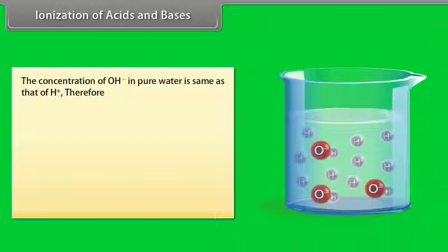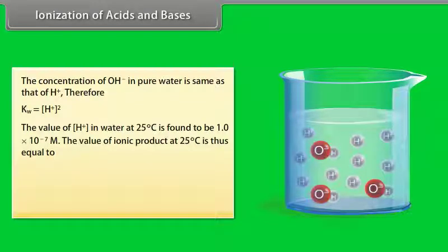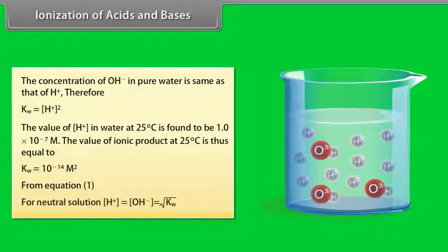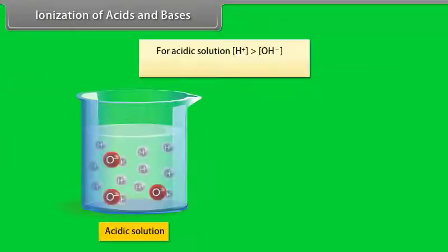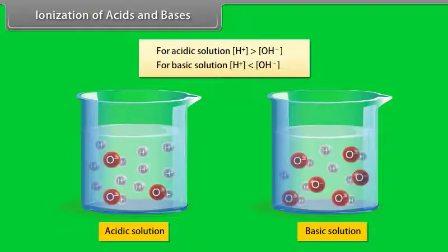The concentration of OH⁻ in pure water is the same as that of H⁺, therefore Kw = [H⁺]². The value of [H⁺] in water at 25°C is found to be 1.0 × 10⁻⁷ M, and the value of Kw at 25°C is 10⁻¹⁴ M². For a neutral solution, [H⁺] = [OH⁻] = √Kw. For an acidic solution, [H⁺] > [OH⁻]. For a basic solution, [H⁺] < [OH⁻].